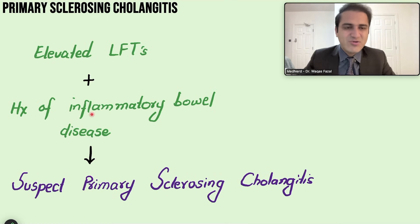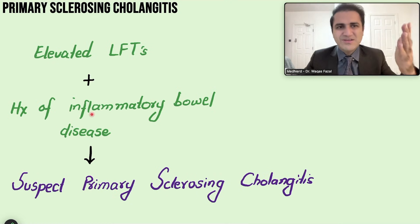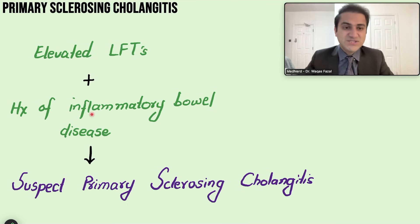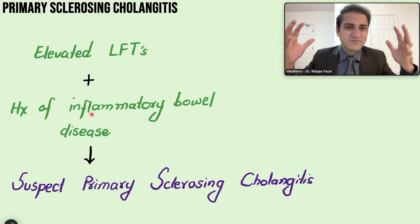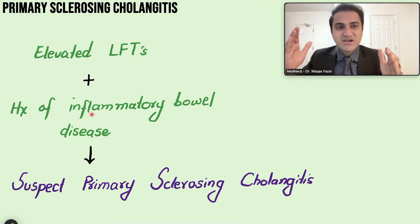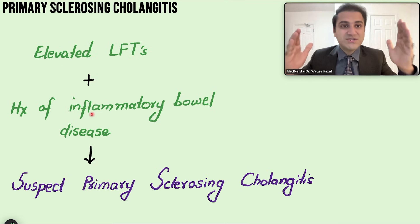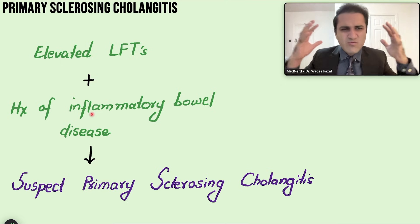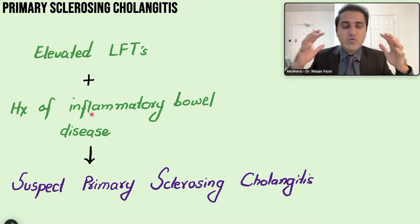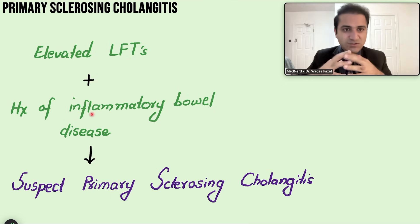If you see elevated liver function tests in a patient with a history of inflammatory bowel disease, suspect primary sclerosing cholangitis. This is a strong, important association — just as giant cell arteritis is strongly associated with polymyalgia rheumatica, ulcerative colitis is strongly associated with PSC.